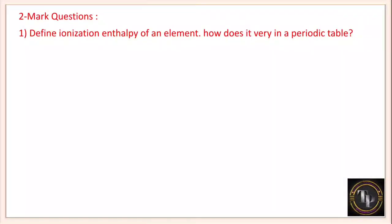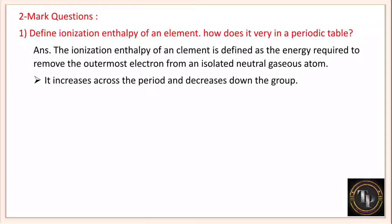Define ionization enthalpy of an element and how it varies in the periodic table. Ionization enthalpy is the energy required to remove the outermost electron from an isolated neutral gaseous atom. It increases across the period because as you move left to right, atomic size decreases so the nucleus attracts the outermost electron more strongly, requiring more energy. It decreases down the group because as size increases, the attractive power between nucleus and outermost electron decreases.